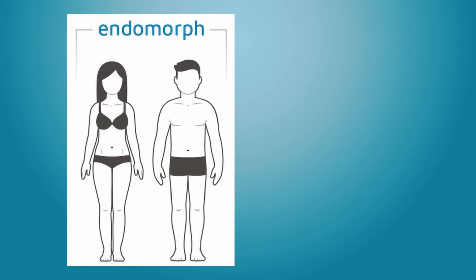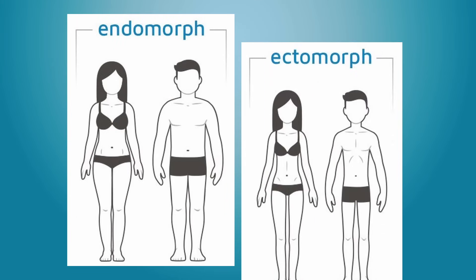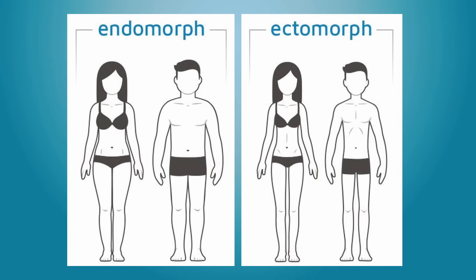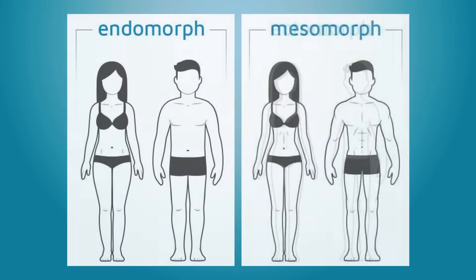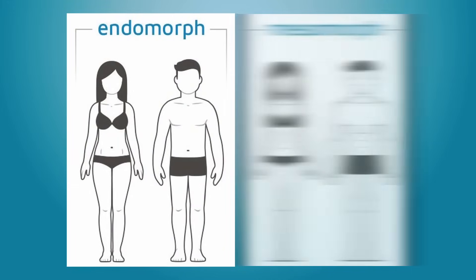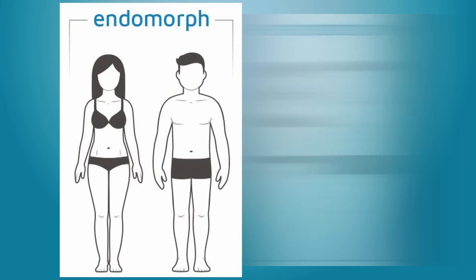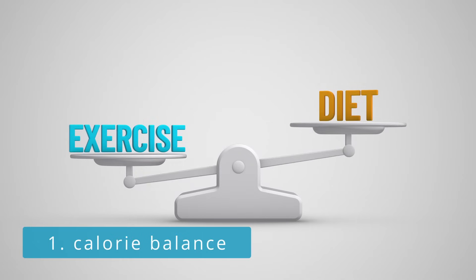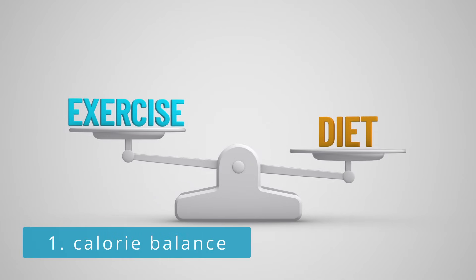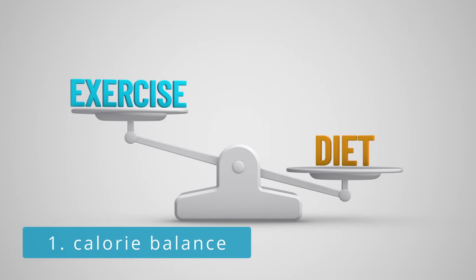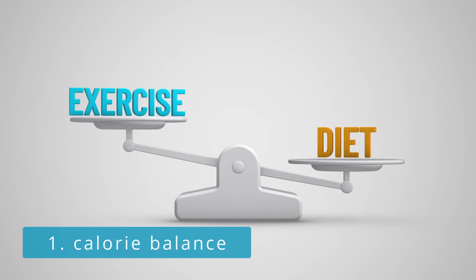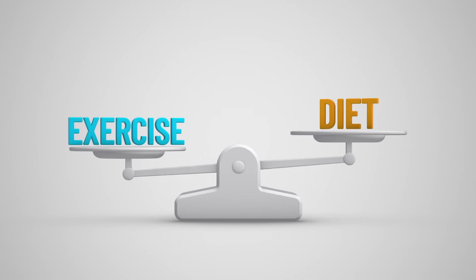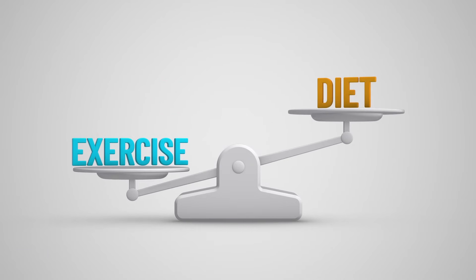I'll provide examples of best dietary practices for endomorphs and ectomorphs. If you're a hybrid, you should lean toward the recommendations for your dominant traits. The most critical factor in controlling body weight is the difference between the calories you consume and the calories you burn.